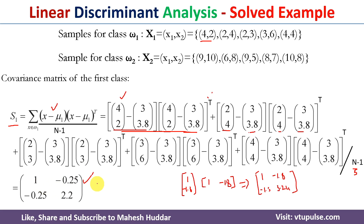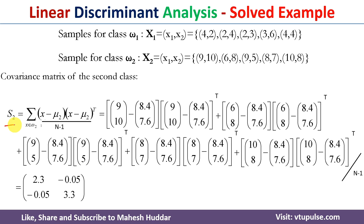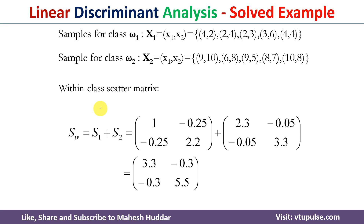The same process is repeated for the second class to calculate the covariance matrix S2, replacing the data points and using mu2. Once we have both covariance matrices, we take their sum to get the within-class scatter matrix Sw. So Sw equals S1 plus S2.